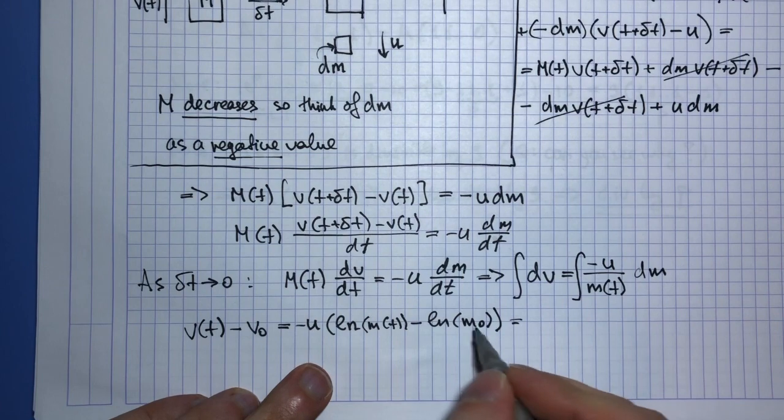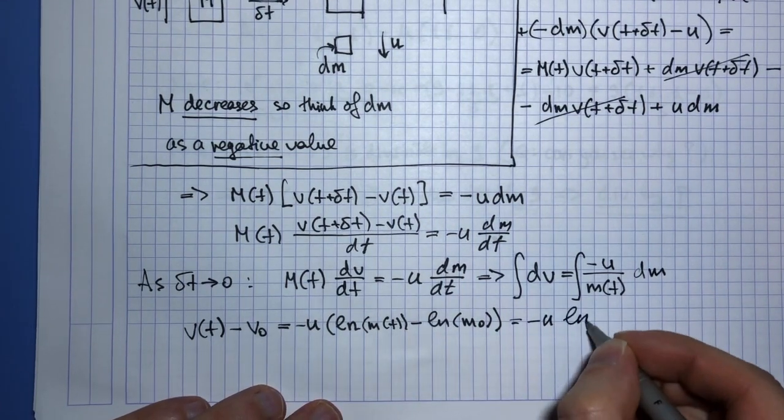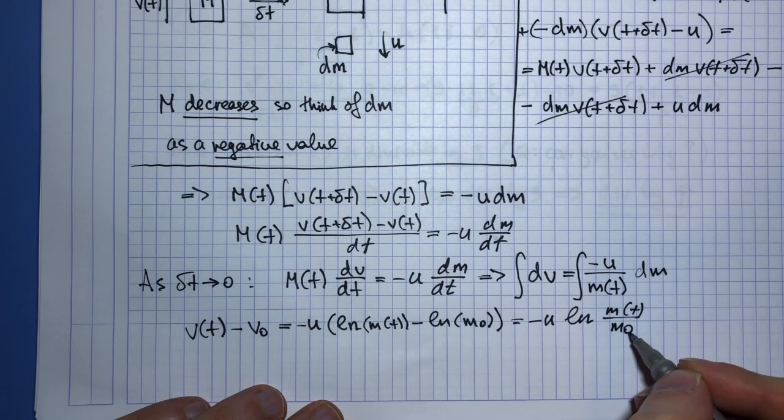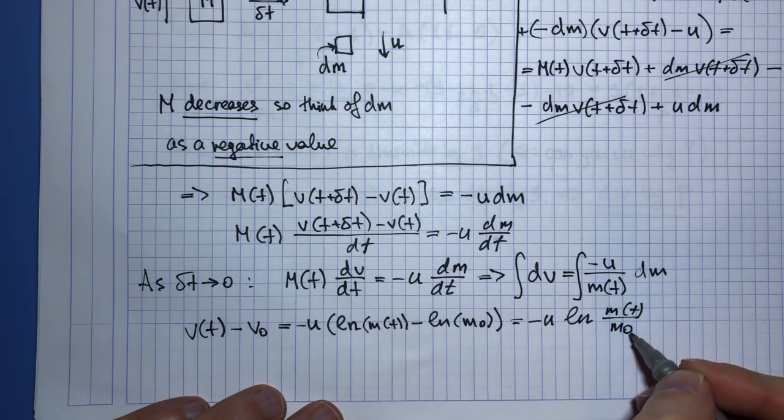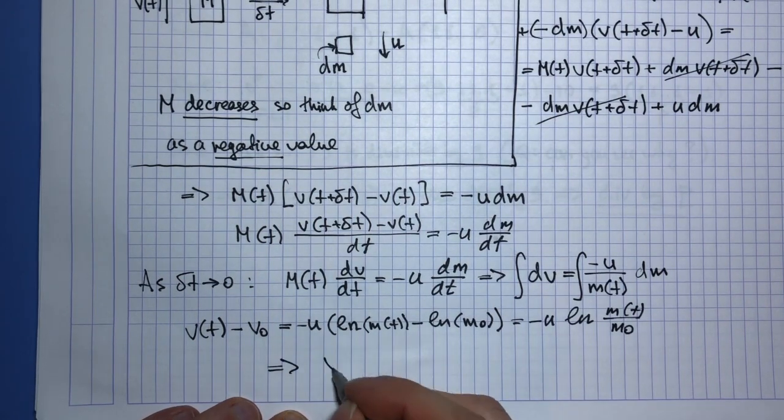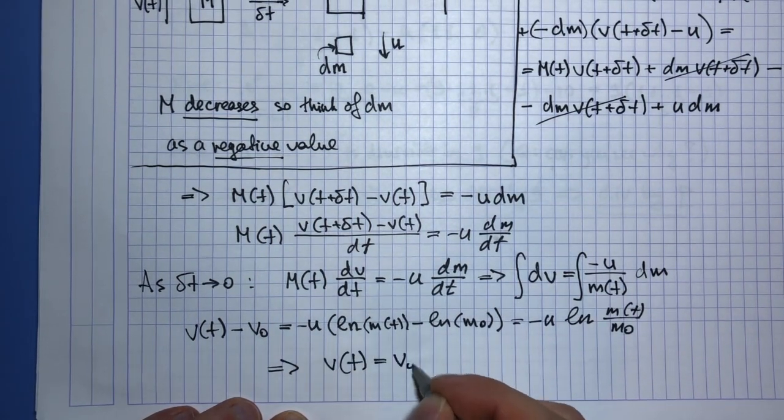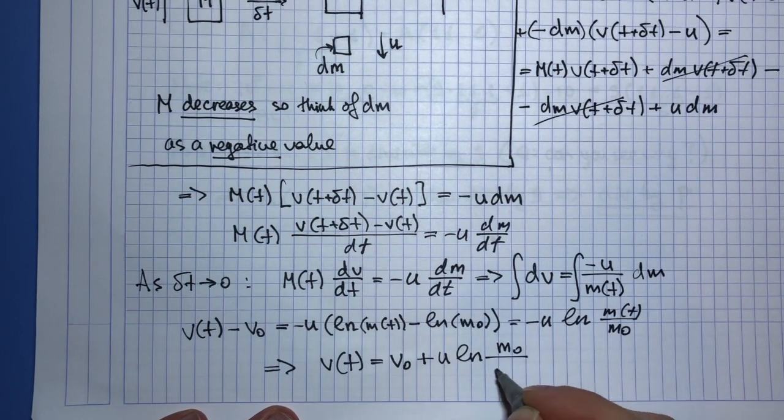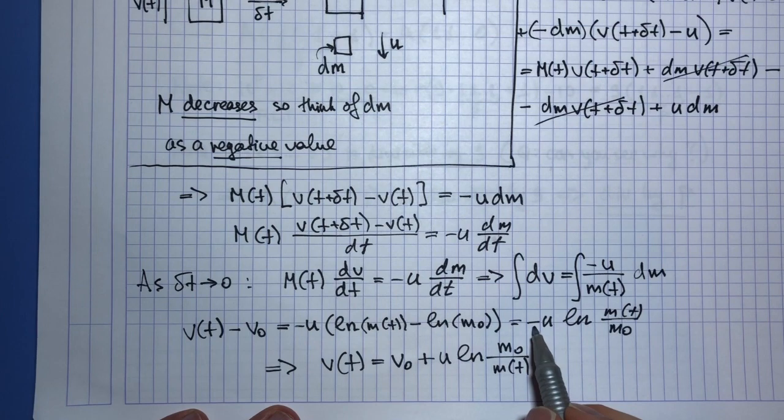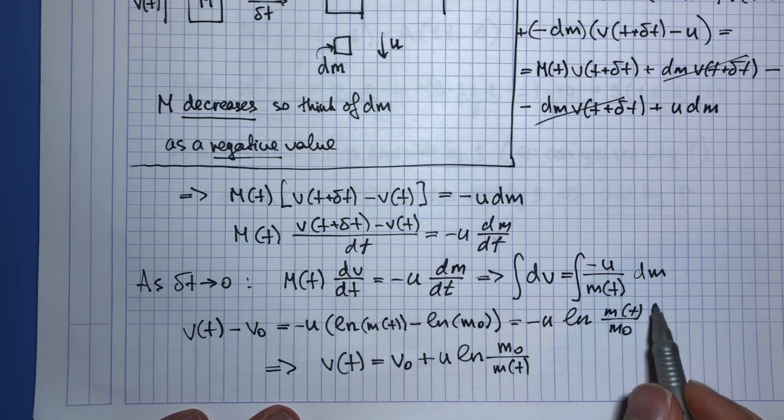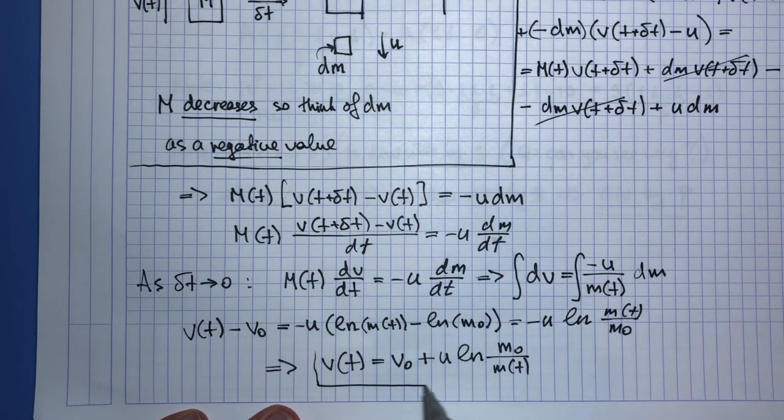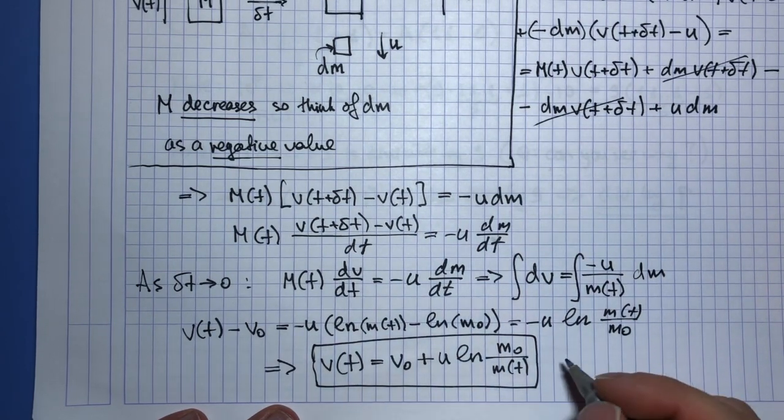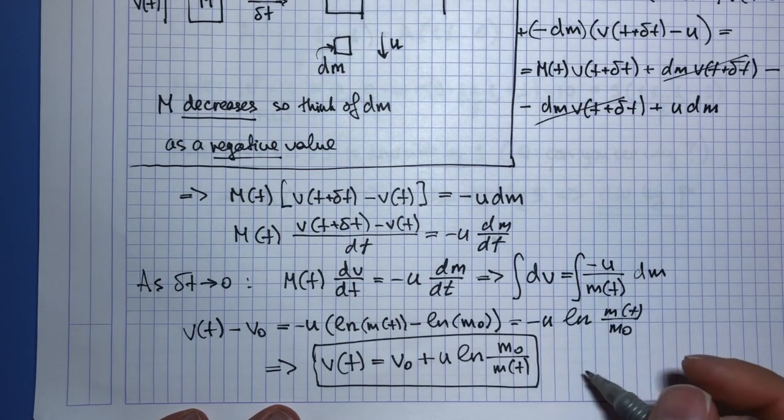So then on the right hand side using logarithm laws, we can write it as a ratio of current mass and initial mass. And so overall we have that v(t) is v0 plus u times logarithm m0 divided by m(t). So this is the equation that we get, and you may have seen this equation before under the name of Tsiolkovsky's equation.